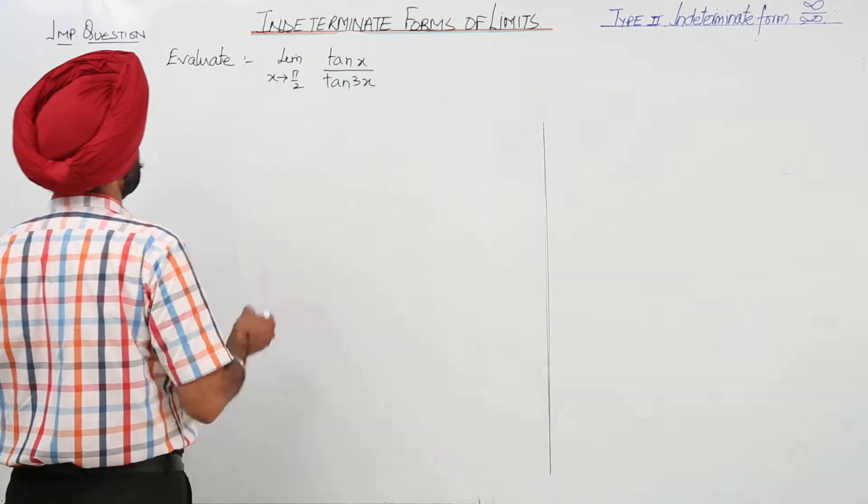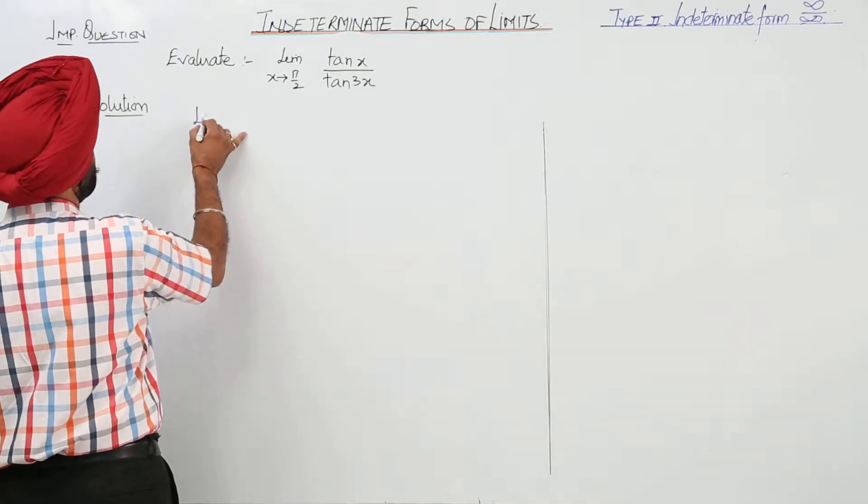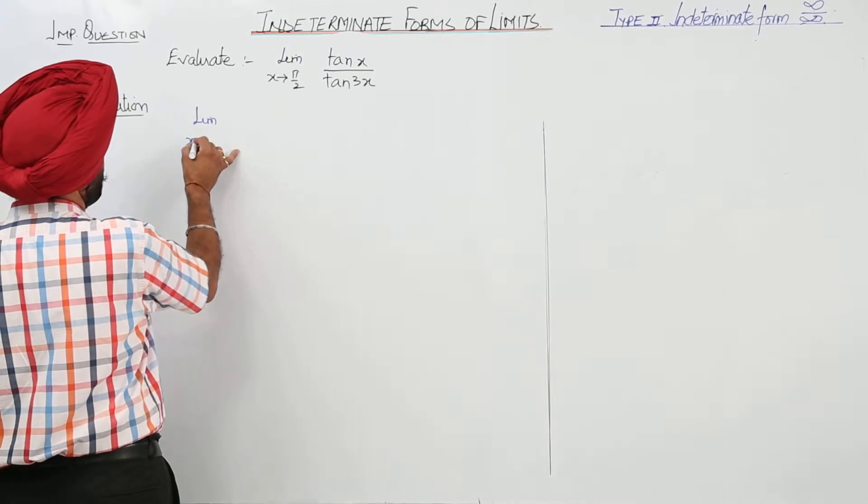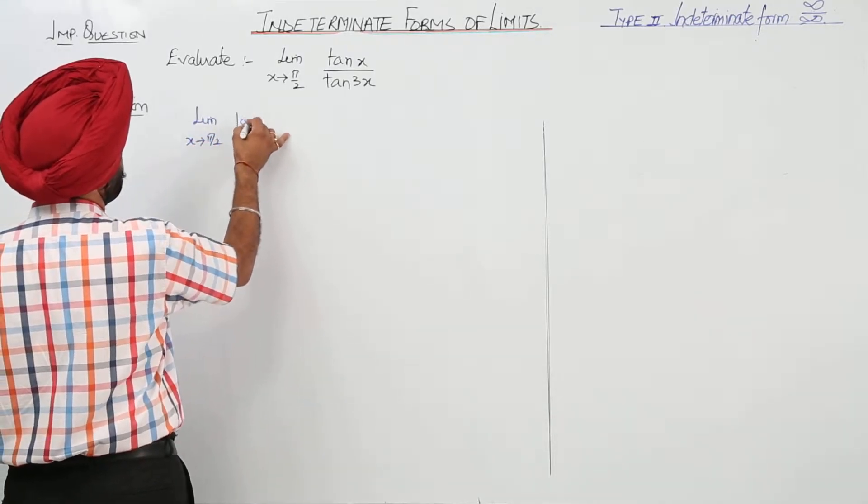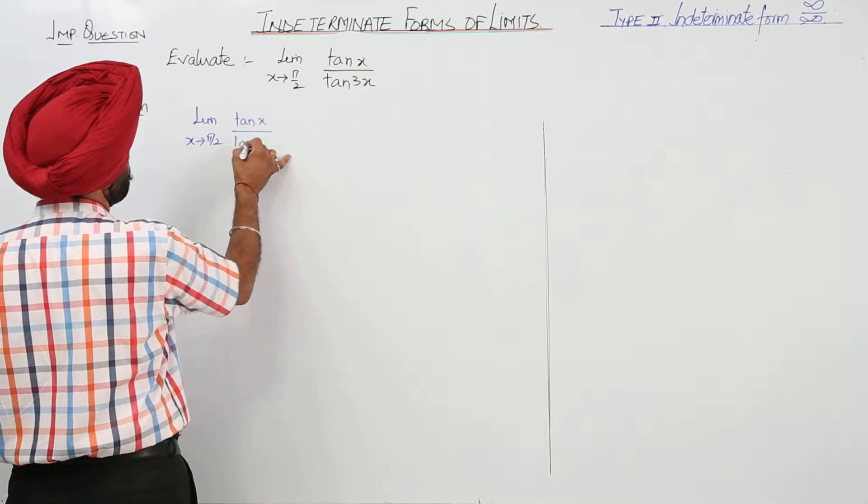A very important question. Limit x approaches π/2: tan x upon tan 3x.